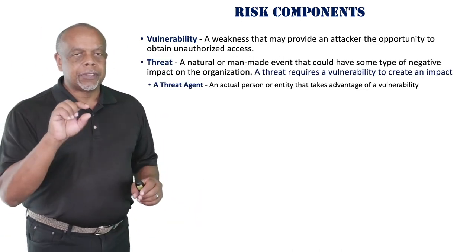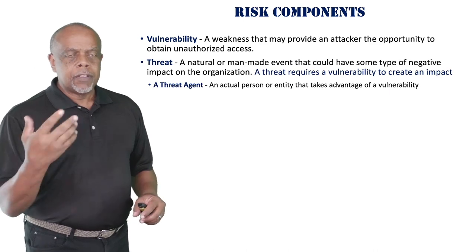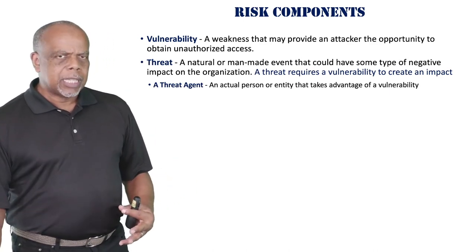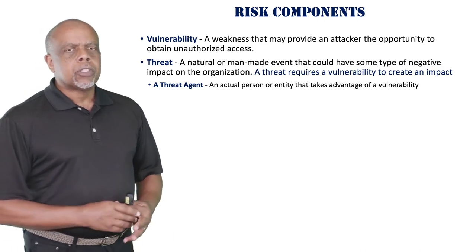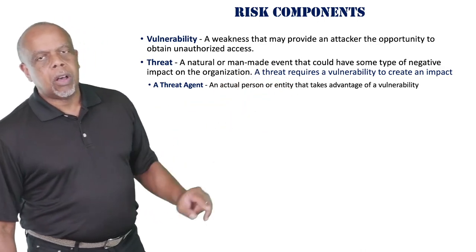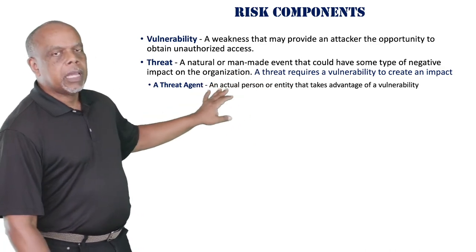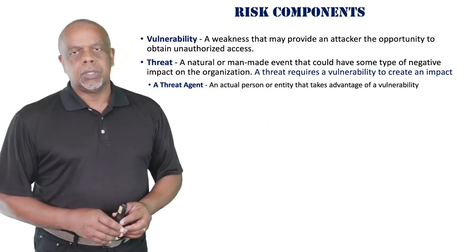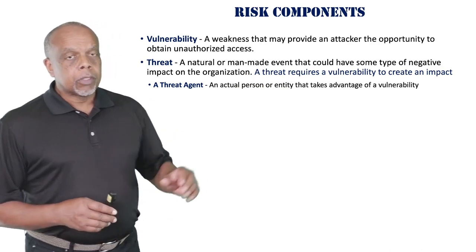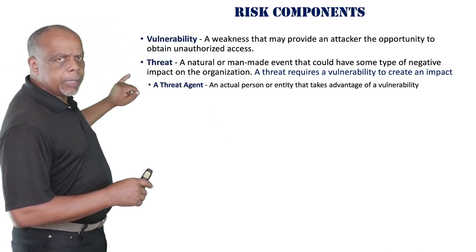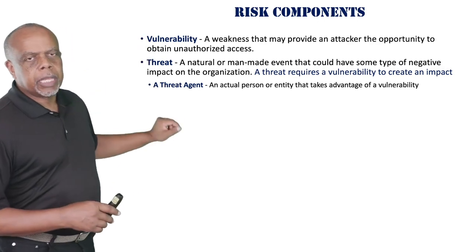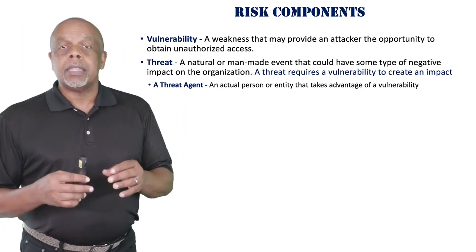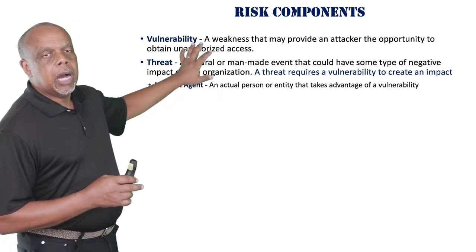The thing we have to look at is the threat. If we have a vulnerability and there's no threat or threat agent, our risk is relatively low. A threat is a natural or man-made event that can cause some type of negative impact on your organization. A threat requires a vulnerability to create an impact — so you see there's a link between threats and vulnerabilities. A threat agent is an actual person or entity that takes advantage of a vulnerability.